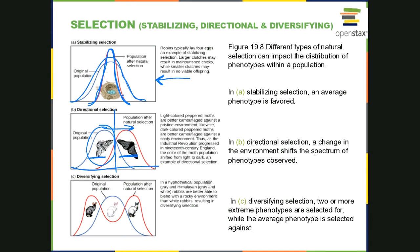Disruptive selection is when both extremes are present at the same time. In an environment with very dark soil and light-colored rocks, animals camouflaged at both extremes survive. Those with the in-between phenotype stand out in both the dark and light areas and get acted on by predators. So both extremes are favored while the middle phenotype is eliminated.